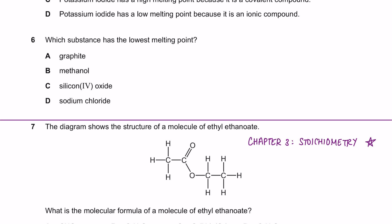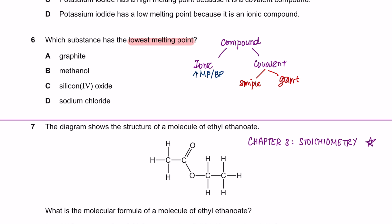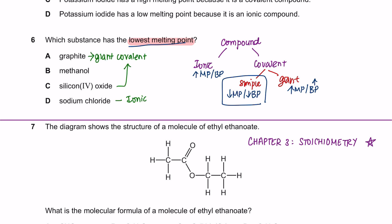Question 6: which substance has the lowest melting point? There are two types of compounds you will learn. The first is an ionic compound and the second is a covalent compound. Ionic compounds have high melting and boiling points. In covalent compounds, you have simple covalent or giant covalent. A simple covalent compound has a low melting point and boiling point, whereas a giant covalent compound has a high melting point. So the lowest melting point would be a simple covalent compound, which is methanol.